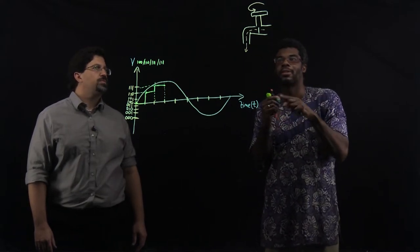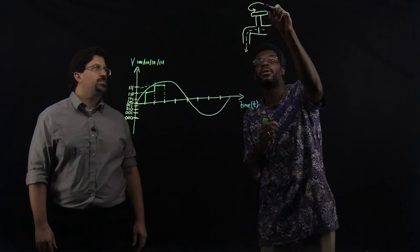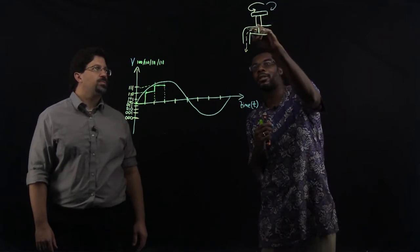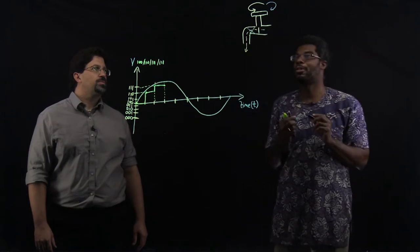And if I turn the tap, let me use a different color, to the right to close the valve, then what it's going to do is stop the flow of that water.